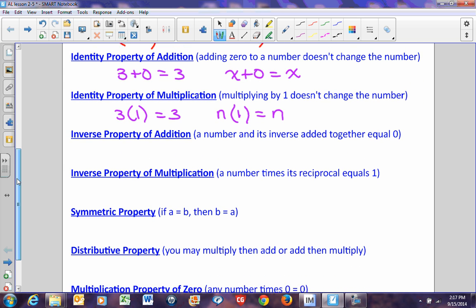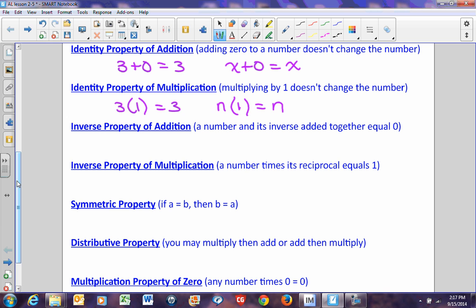The inverse property of addition says a number and its inverse added together equals 0. So in other words, negative 3 plus 3 equals 0. n plus negative n equals 0. A number and its additive inverse or a number and its opposite added together equals 0.